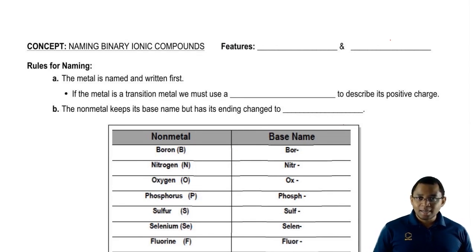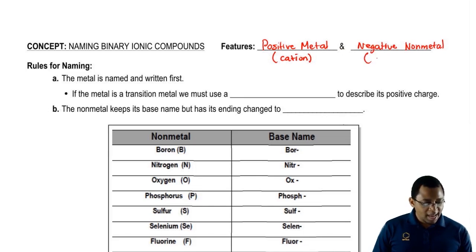Well, basically a binary ionic compound is anytime we have a positive metal and a negative non-metal connected together. Basically, we have a cation with an anion.